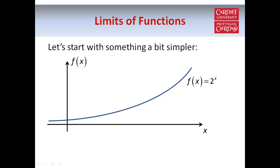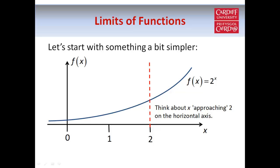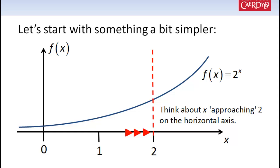Here's a graph of a function — suppose this function is f of x equals 2 to the power x. This red dotted line is at x equals 2, and we're going to look at what happens to the function — the blue curve — when x approaches a value of 2. You can think about x approaching 2 from the left-hand side or from the right-hand side, which is why we sometimes talk about left-hand and right-hand limits. In this particular example it doesn't matter which direction x approaches 2 from — the limit is still going to be the same.